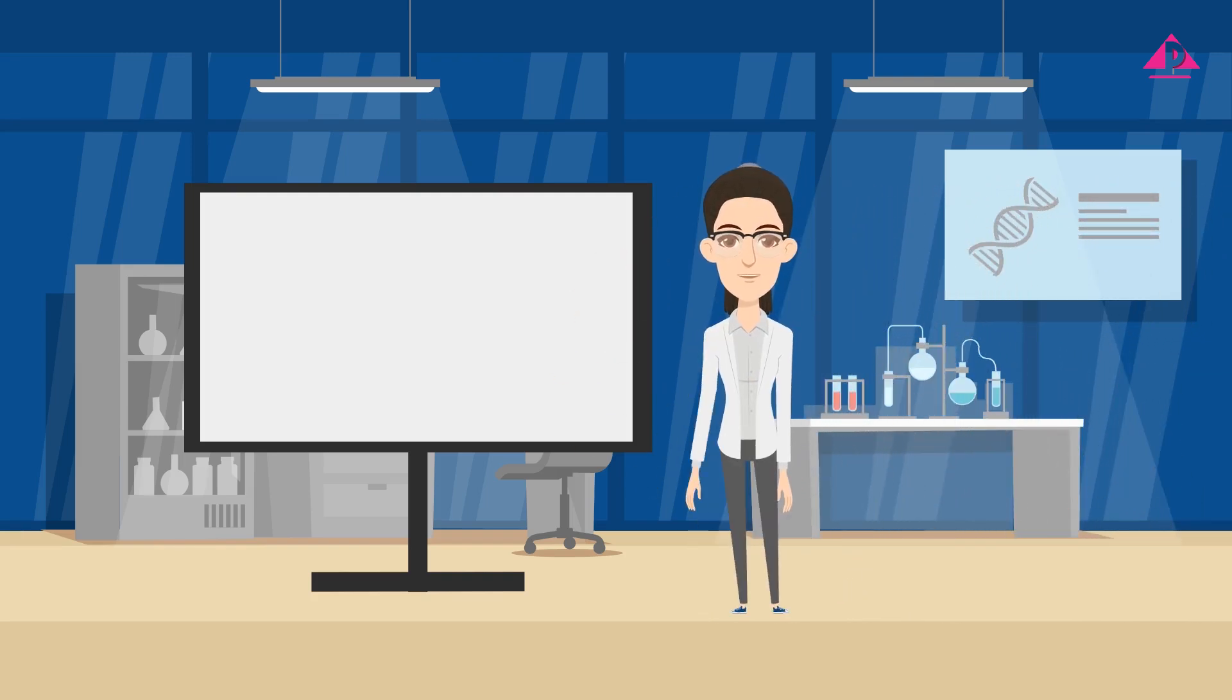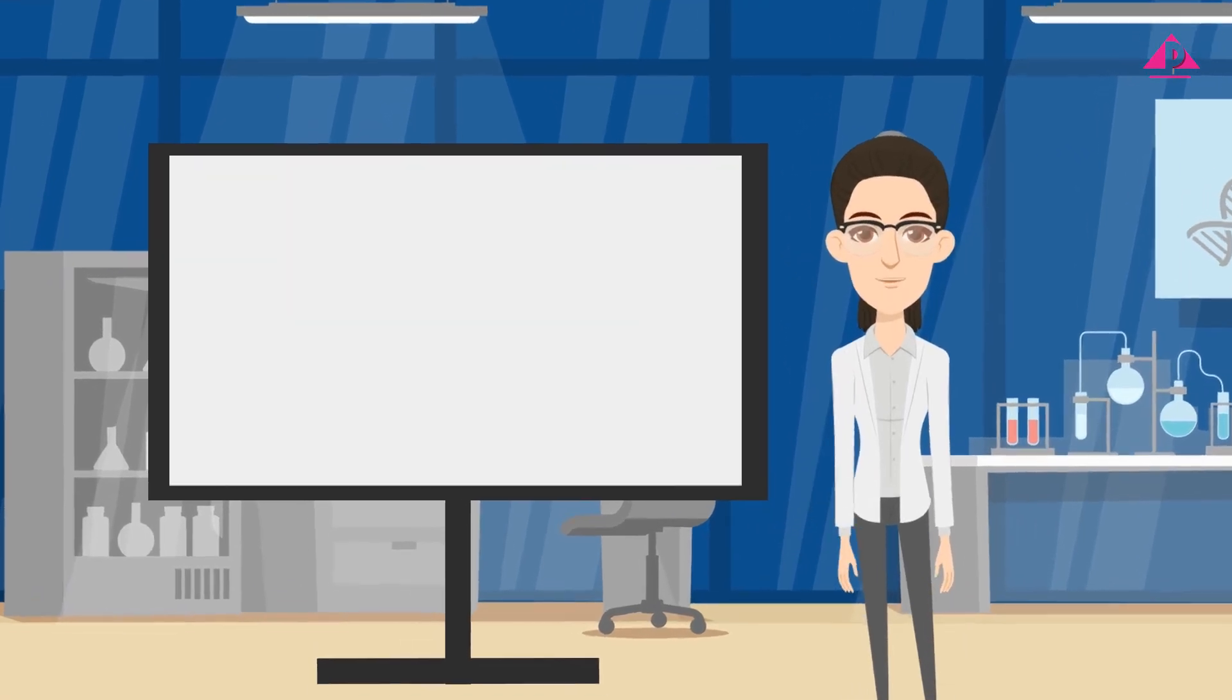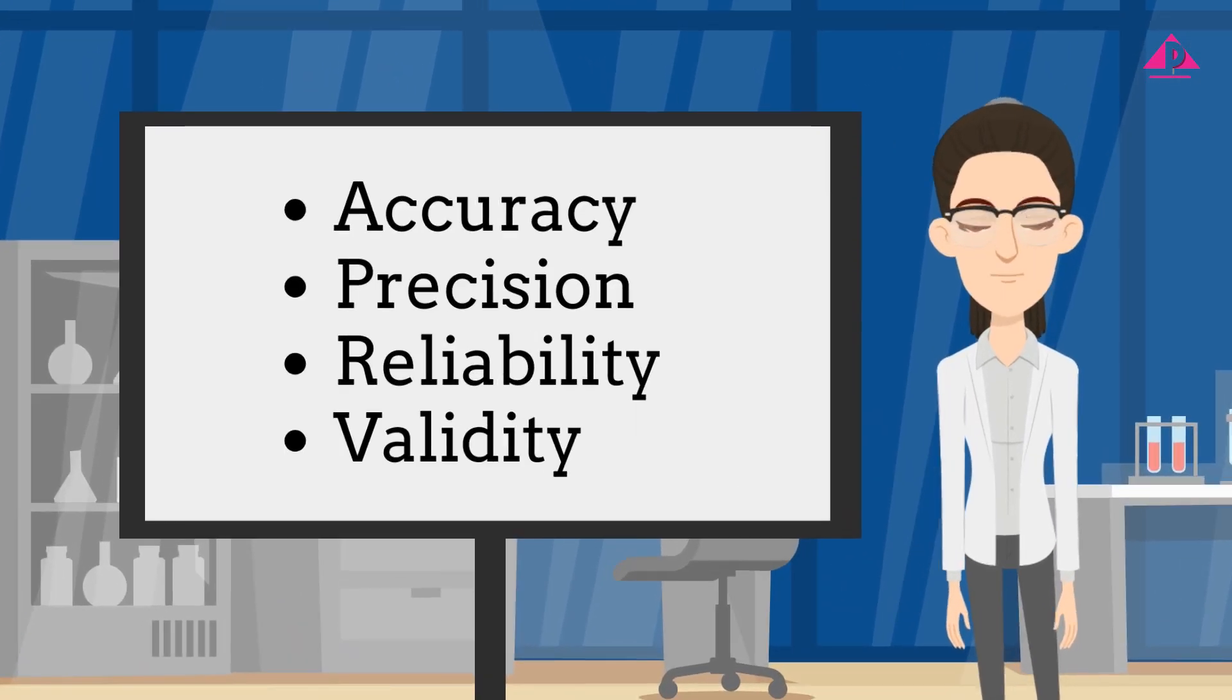Hey there, ever wondered how we scientists make sure our experiments are not just random guesses? Today I'm going to walk you through four key concepts that help us produce trustworthy results in our experiments: accuracy, precision, reliability, and validity.